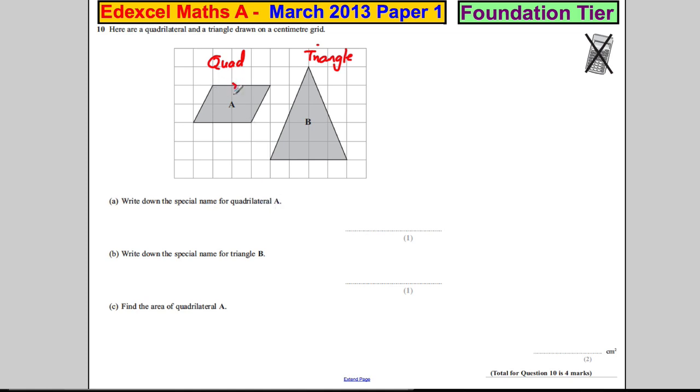We have those two sides parallel, and similarly the other two sides are parallel. So a four-sided shape with two pairs of parallel sides is called a parallelogram. Write down the special name for triangle B.